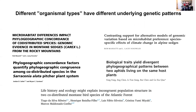Species delimitation can be difficult for many reasons. One reason is that speciation is a continuous process, and it can be difficult to know when to draw the line between populations and species. Another reason is due to the diversity of the taxa we are trying to delimit, particularly when we use genetic data, because different organismal types have different underlying genetic patterns associated with populations and species. For example, a species of albatross will have very different underlying genetic patterns compared to a species of montane salamander.